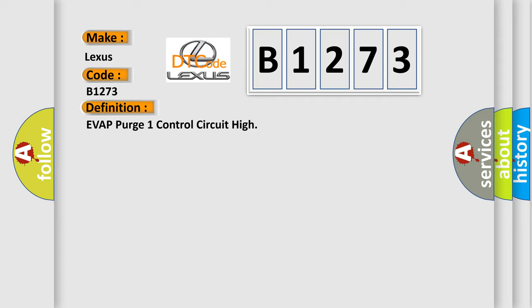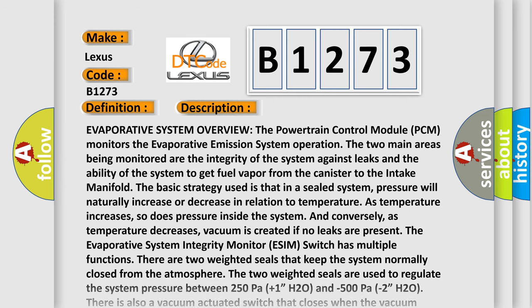So, what does the Diagnostic Trouble Code B1273 interpret specifically for Lexus car manufacturers? The basic definition is Evap Purge 1 Control Circuit High. And now this is a short description of this DTC code.